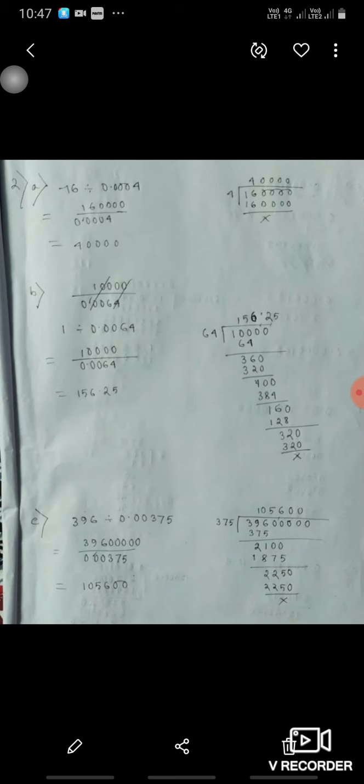Now 2a part, 16 divided by 0.0004. So while removing decimal, it will become 160,000 upon 4 which will be equal to 40,000. Now b part, 1 divided by 0.0064.